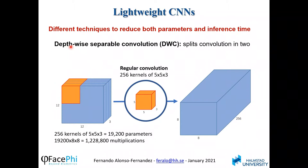Another technique is depthwise separable convolution, which splits convolution in two. In regular convolution, if we want to apply a 5×5 filter, we need a filter of 5×5 times the number of input channels — 3 in this case. To generate an output of 256 channels, we apply 256 of these filters, resulting in nearly 20,000 parameters and more than 1.2 million multiplications to obtain the output.